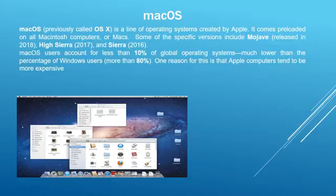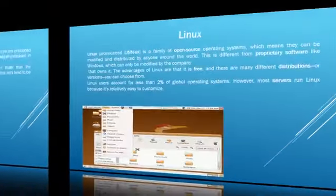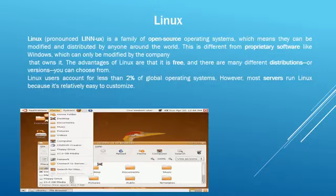Another popular GUI operating system is Mac, created by Apple. It is preloaded on all Mac machines. Famous versions include Mojave and Sierra. About 10% of the world population uses it, and it has similar features to Windows with the difference being the machine. Linux is a family of open source operating systems, meaning it can be modified and distributed by anyone around the world. Its advantage is that it is free, has different versions to choose from, and most servers run Linux because it is easy to modify.